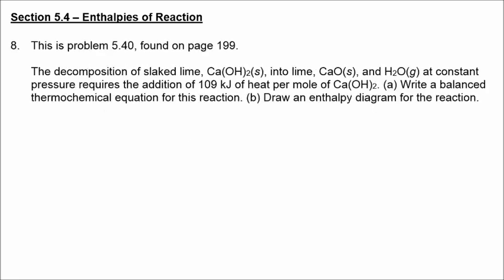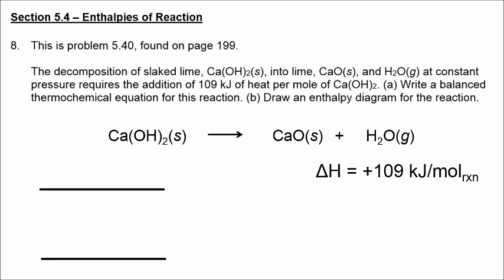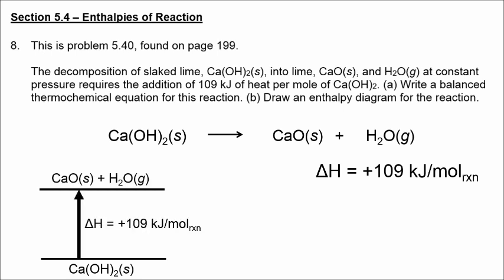In the next example, we have the decomposition of solid calcium hydroxide into solid calcium oxide and water vapor. The delta H is positive because the problem states it requires the addition of 109 kilojoules of heat, making this an endothermic reaction. In the energy diagram, we start with solid calcium hydroxide on the lower level, and after adding 109 kilojoules of heat, we end with solid calcium oxide and water vapor at a higher enthalpy level.